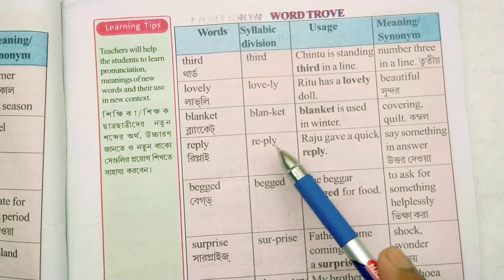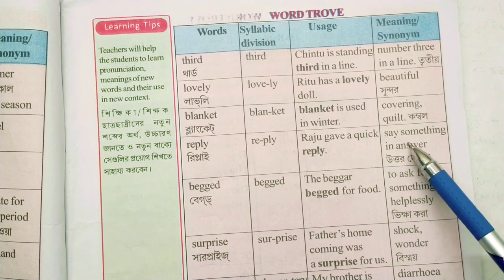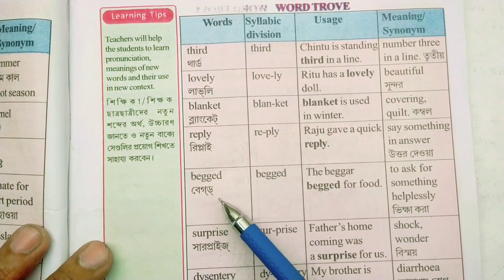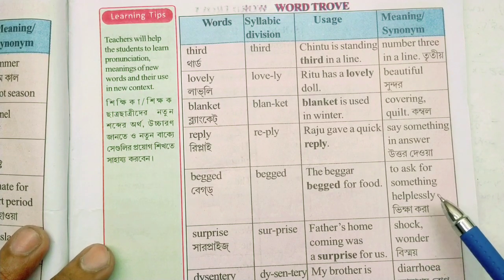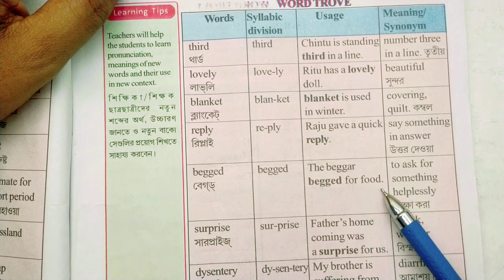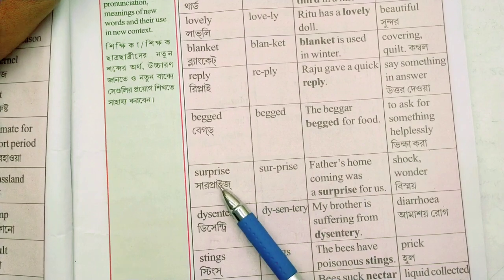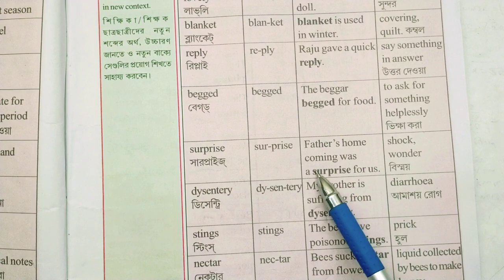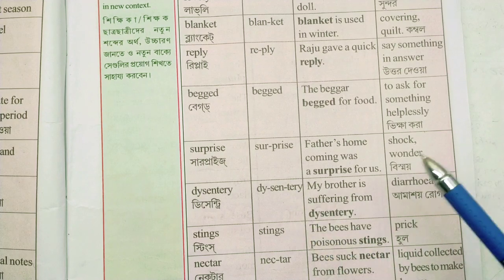Reply — Raju gave a quick reply — say something in answer. Begged — to ask for something helplessly. The beggar begged for food. Surprise — father's homecoming was a surprise for us.